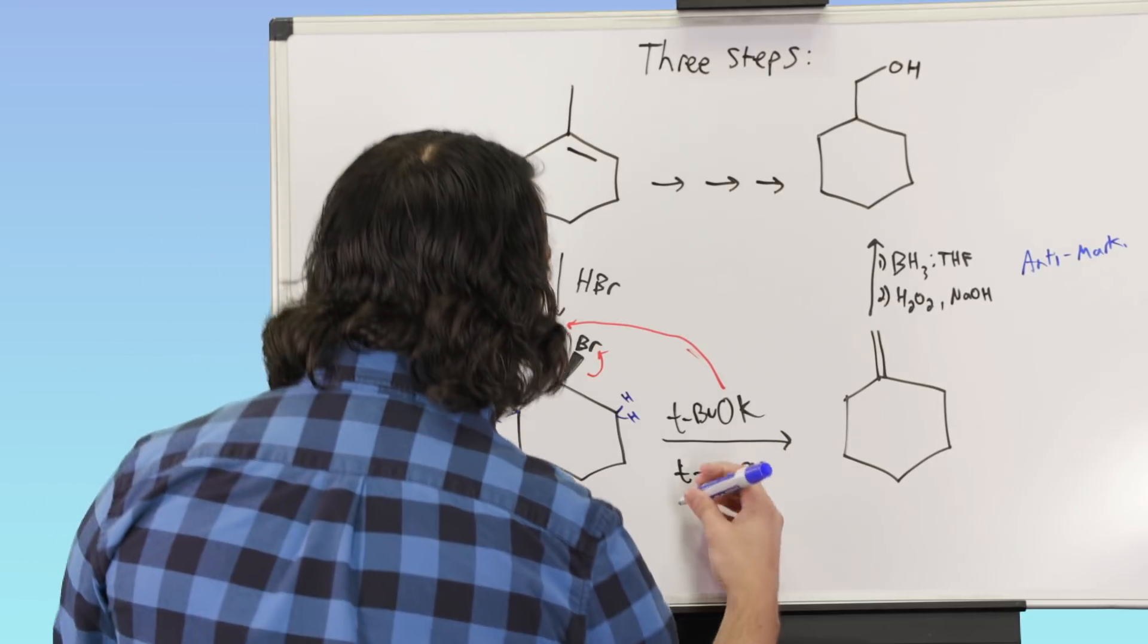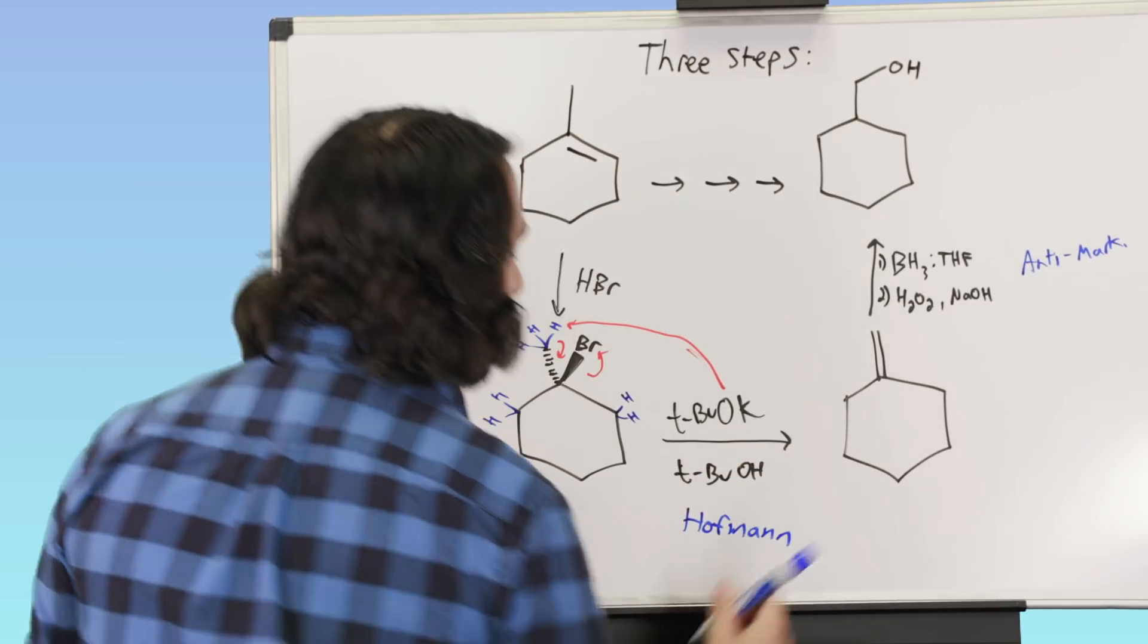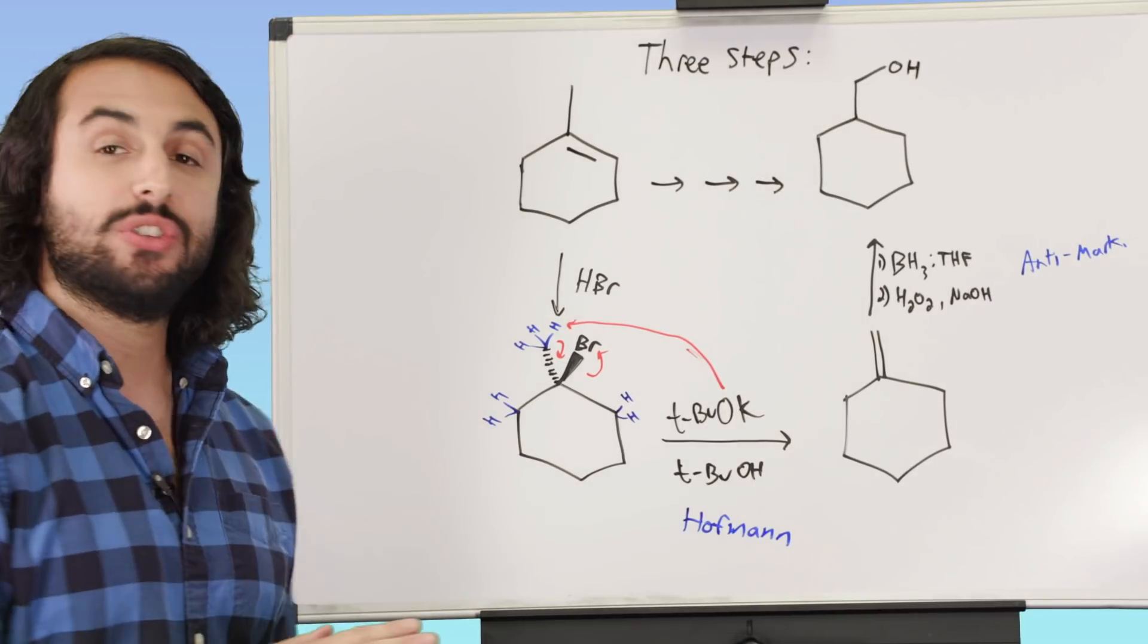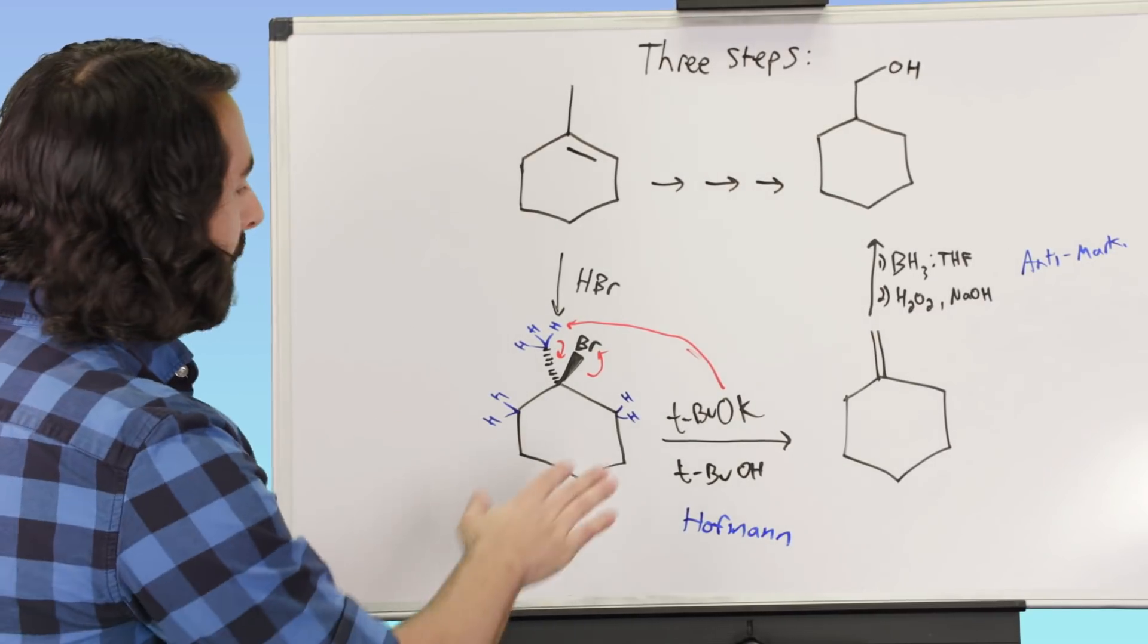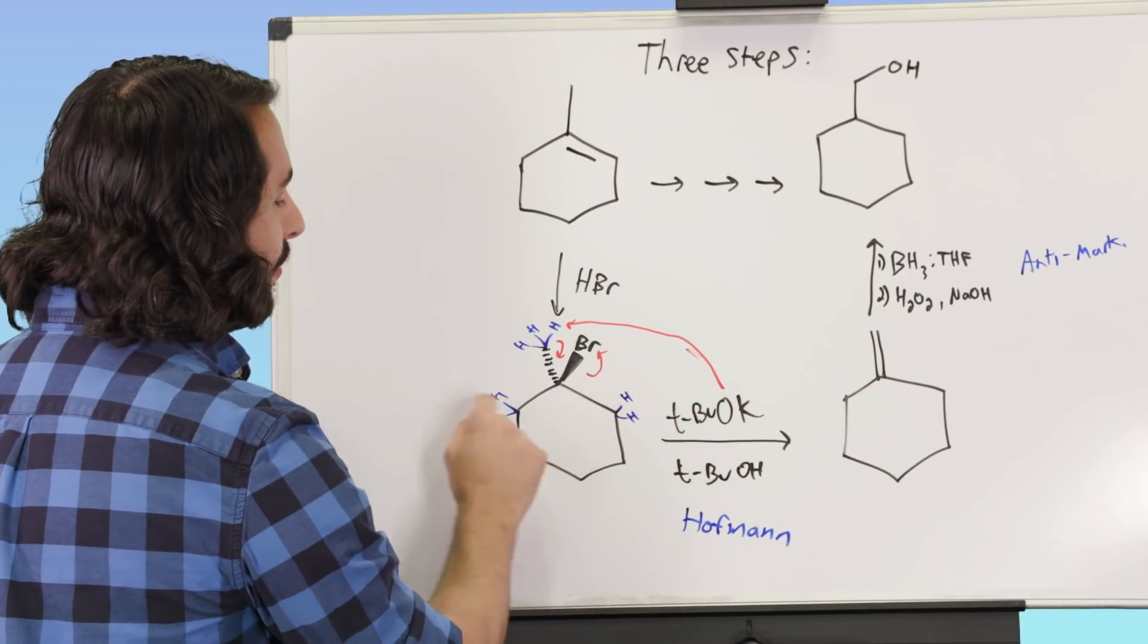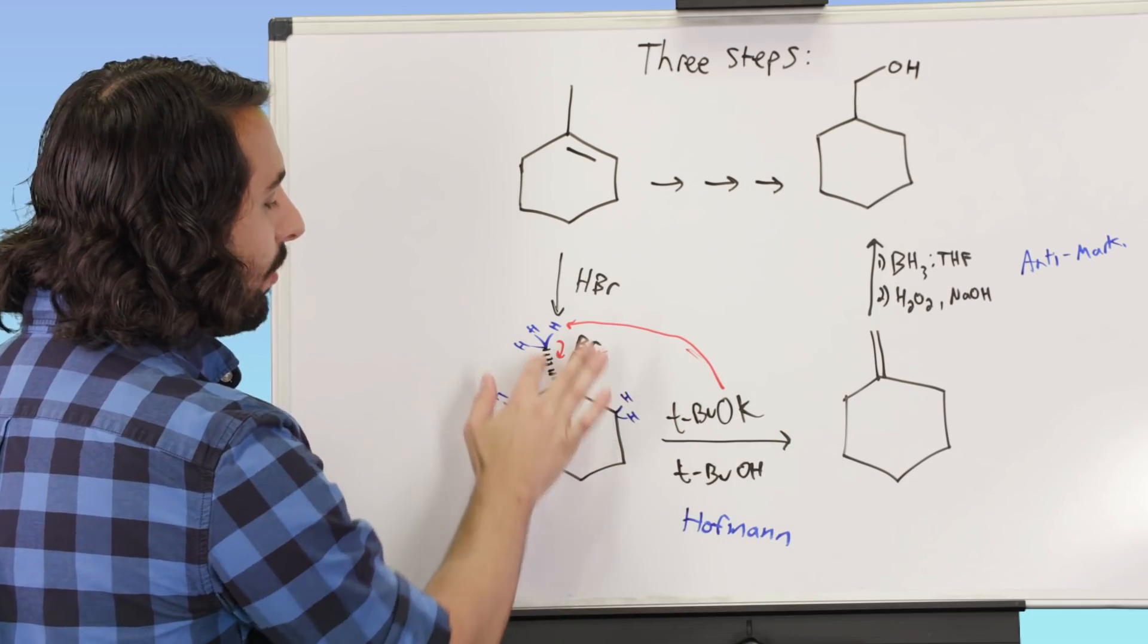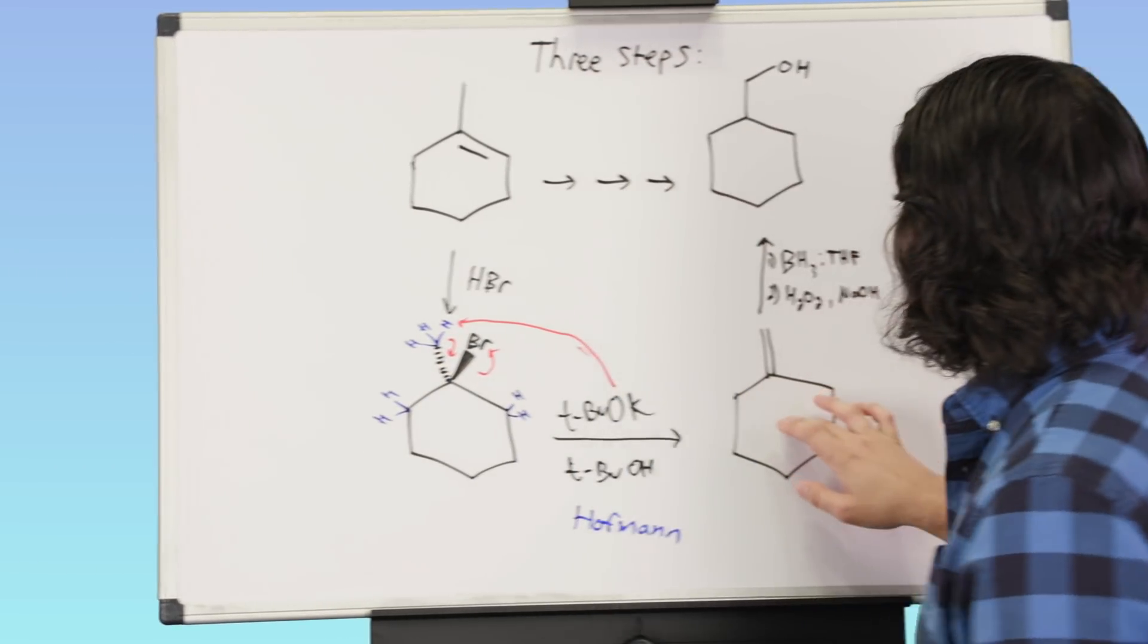So we did Markovnikov hydrohalogenation to get the bromine there, and the reason we did that is that gave us the option to do an elimination to get a pi bond there. We ended up doing a Hoffman elimination. This gave us our Hoffman elimination product, and that was the regiochemistry we wanted because if we had used, say, sodium hydroxide, we would have gotten one of these protons instead and just been right back where we started. But we did tert-butoxide, we went Hoffman.